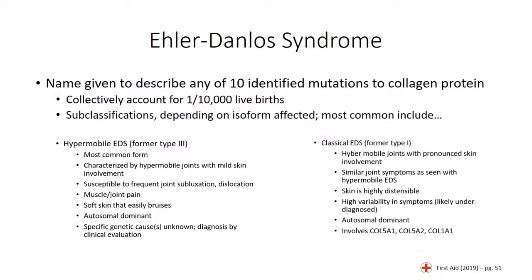A slightly less common form is classical EDS, identified as type 1 EDS in the previous classification system. The presentation pattern is similar to hypermobile EDS, but there is greater involvement of the skin, which appears hypermobile and can be stretched and distended when pulled upon. Patients also tend to bruise easily. Three genes associated with classical EDS are COL5A1 and COL5A2, which code for the alpha-1 and alpha-2 chains in type 5 collagen, and COL1A1. Symptoms vary from patient to patient, and the condition likely goes undiagnosed if the presentation is mild.